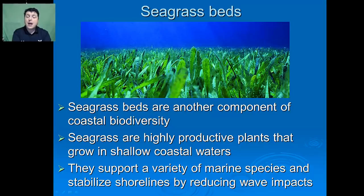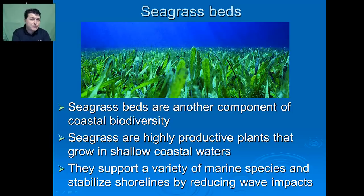Another important component of coastal biodiversity are seagrass beds. Seagrasses are highly productive plants that grow in shallow coastal waters. They support a variety of marine species and help to stabilize the shoreline by reducing the impact of waves.